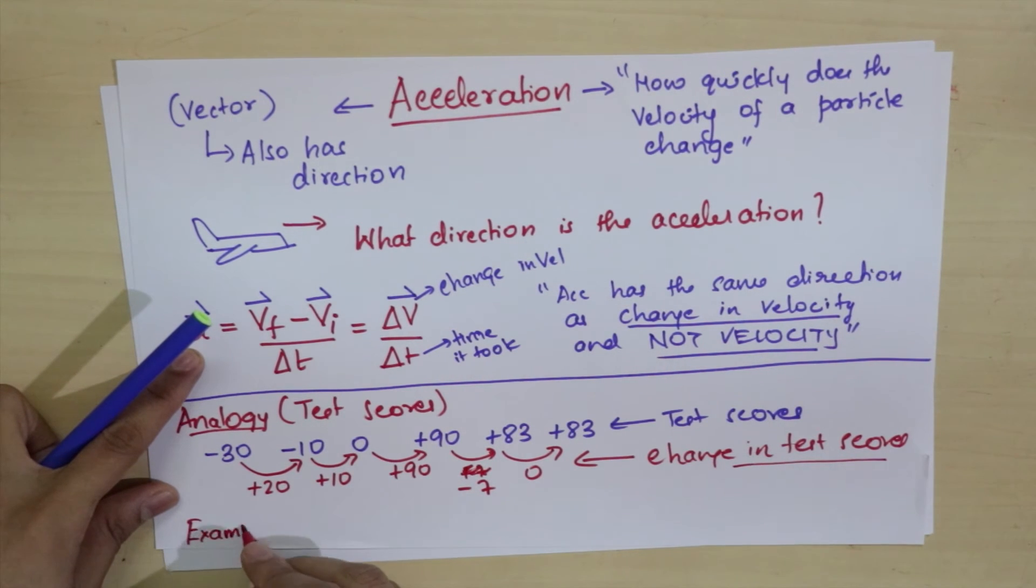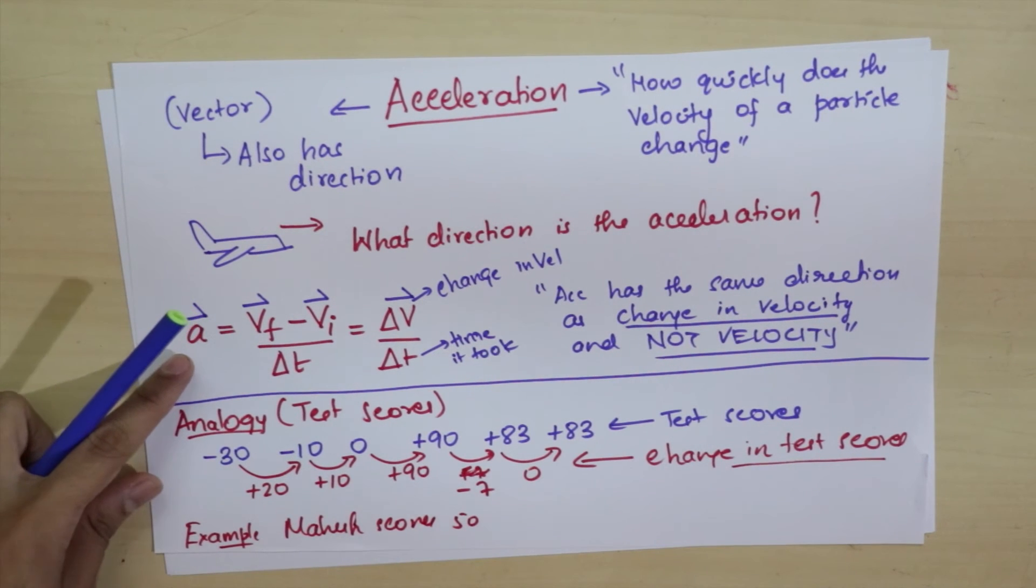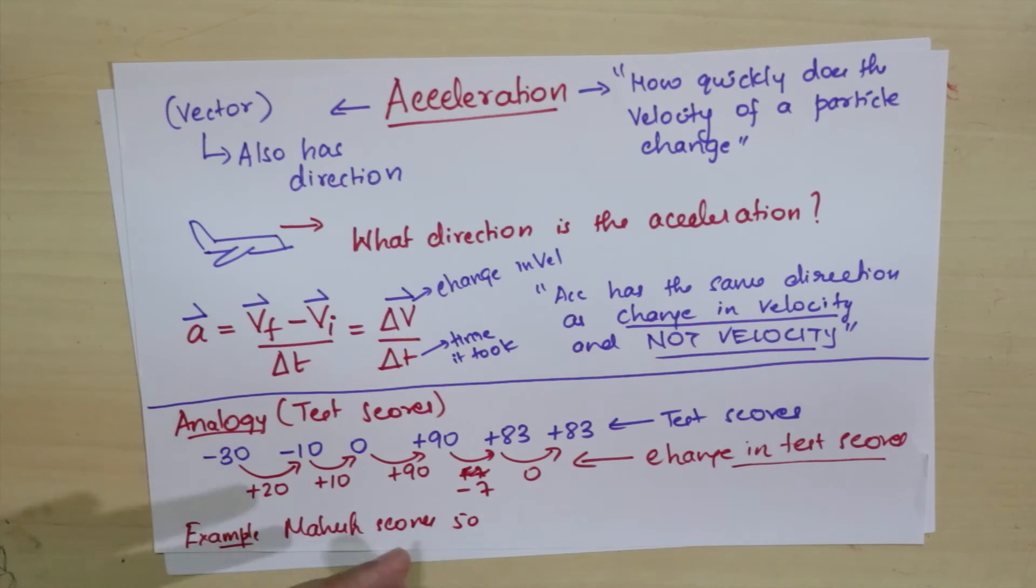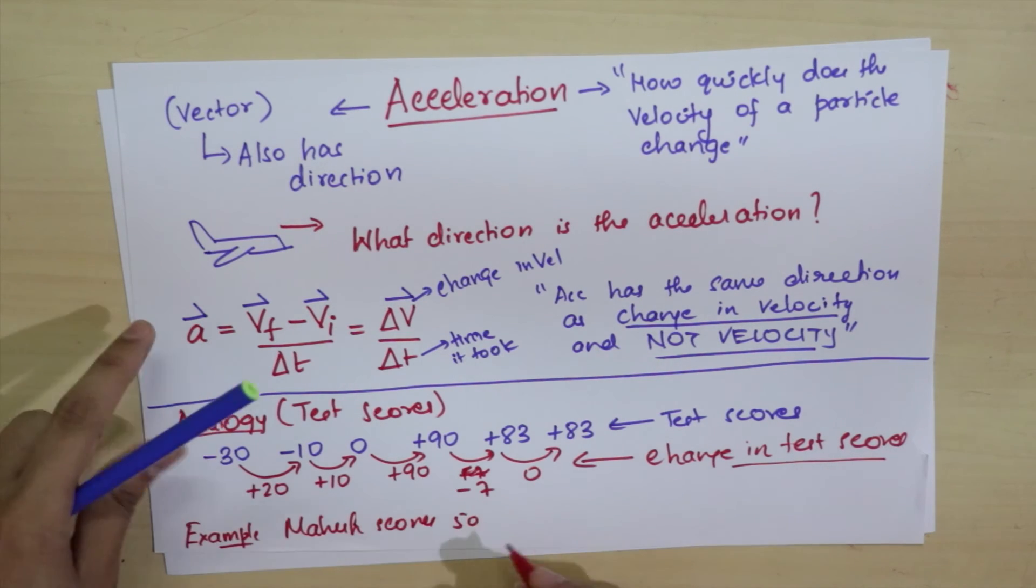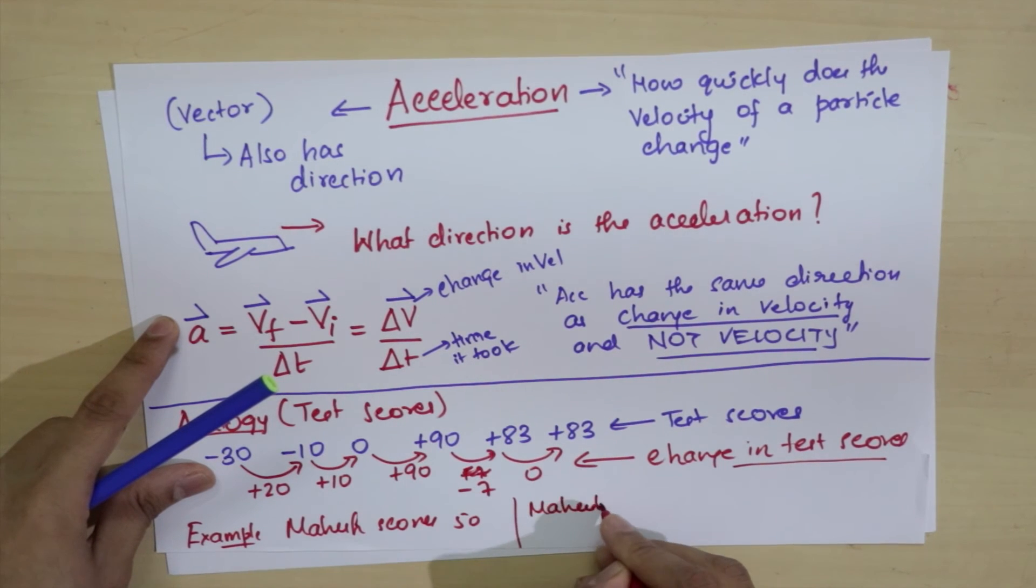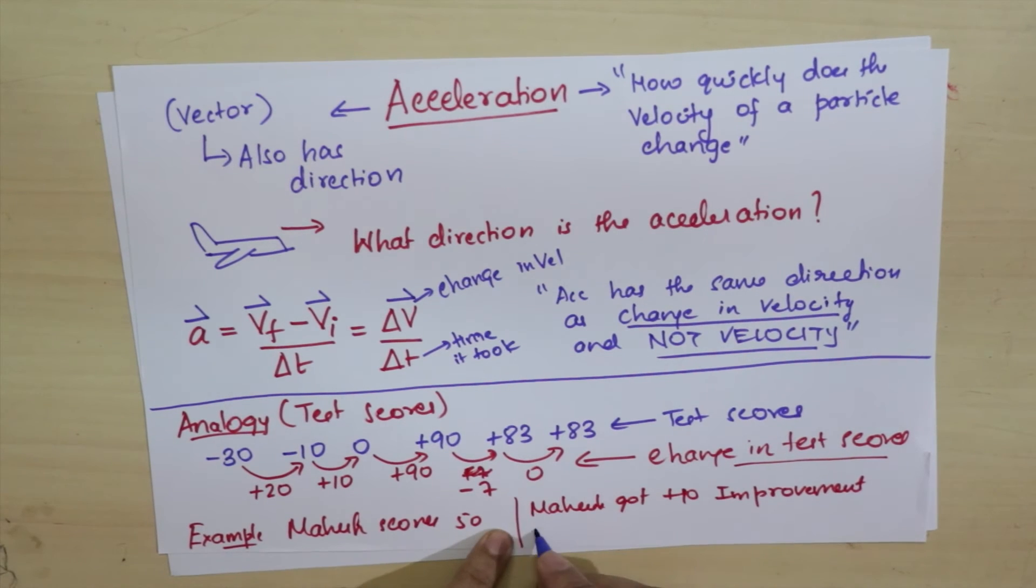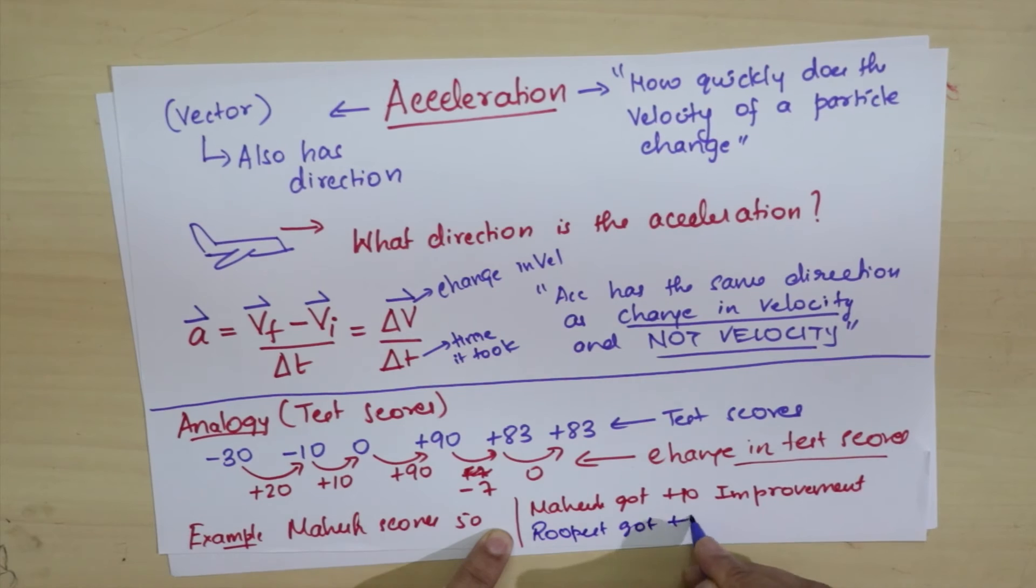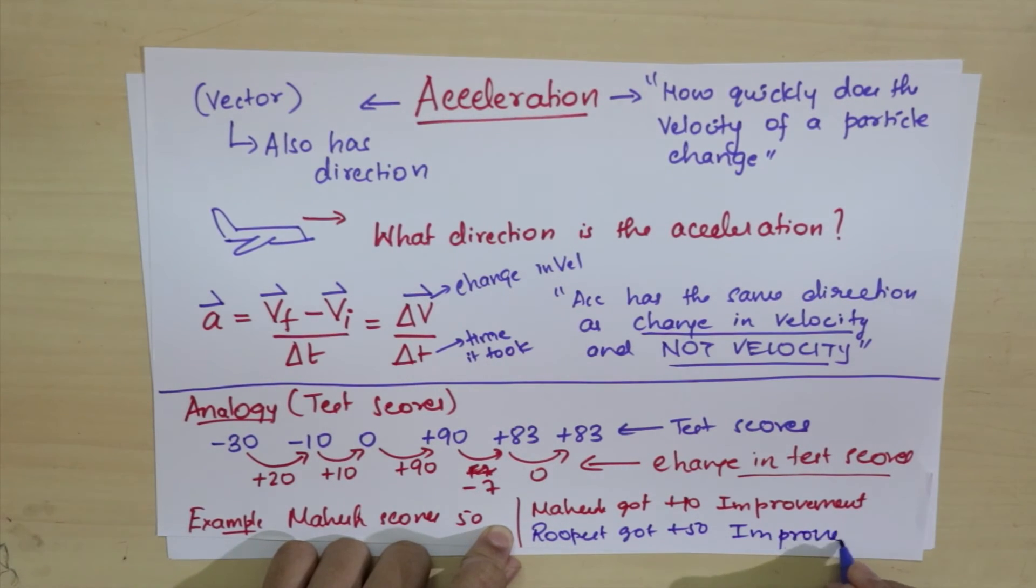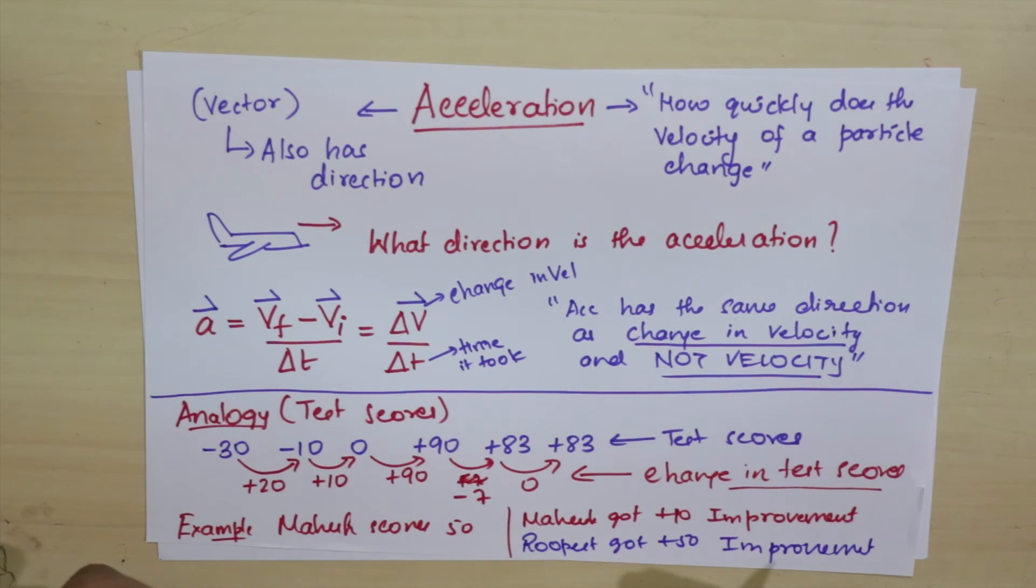If I tell you something about the change in test scores, you have no idea what the test score is, and vice versa. For example, if I tell you Mahesh scores 50 in a test, how much is his improvement? You can't tell, because I haven't told you the history. Similarly, if I tell you Mahesh got plus 10 improvement and his brother Rupesh got plus 50 improvement, who got more points? Again, you cannot tell, because I've only told you the change in test scores.